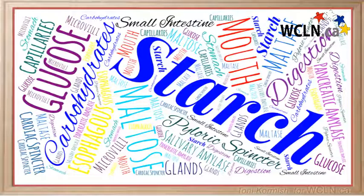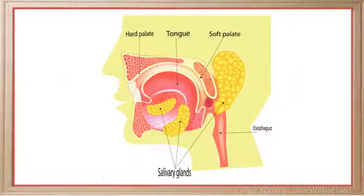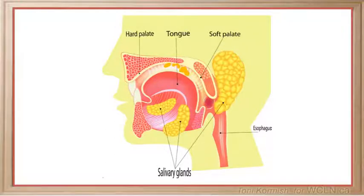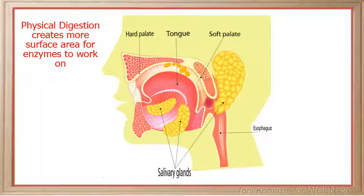In this video we will follow the digestion of starch from the mouth through to the small intestine. Physical digestion of starch begins in the mouth as the starch is chewed, breaking it down into smaller pieces. This physical digestion is important to create more surface area for the digestive enzymes to work on.